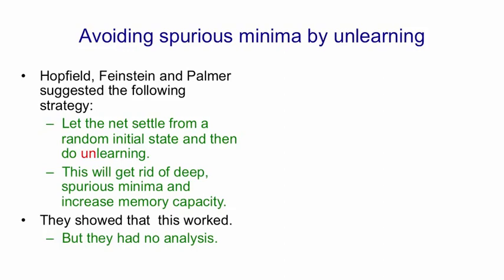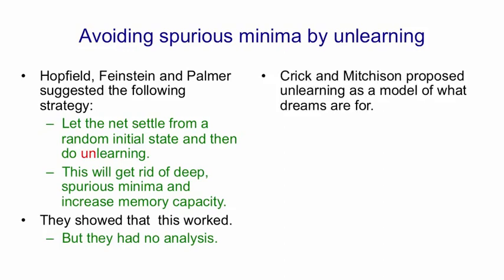Hopfield, Feinstein and Palmer showed that this actually worked, but they didn't have a good analysis of what was really going on. Francis Crick, one of the discoverers of the structure of DNA, and Graham Mitchison proposed that unlearning might be what's going on during REM sleep — that is, rapid eye movement sleep. The idea was that during the day you store lots of things and you'll get spurious minima. Then at night you put the network in a random state, settle to a minimum, and unlearn what you settled to — and that actually explains a big puzzle.